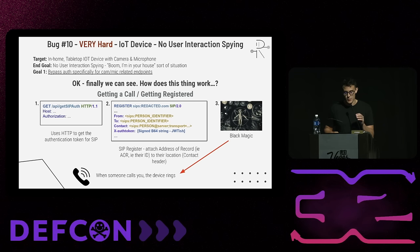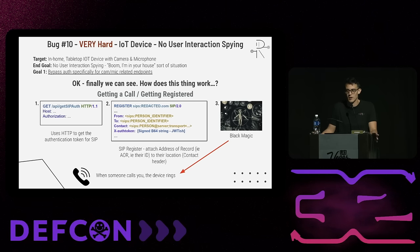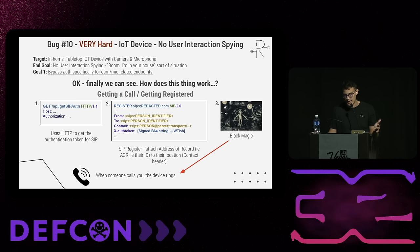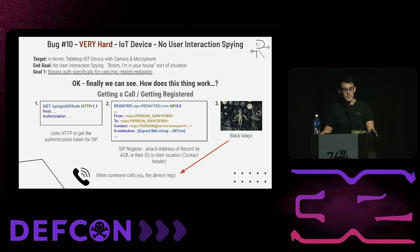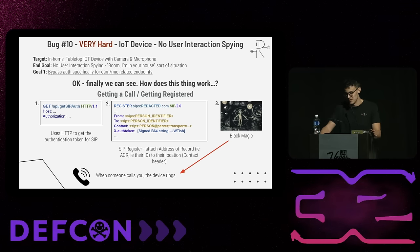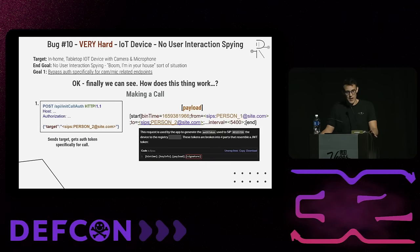They take that auth token from the API request, put it as a header in the SIP protocol — which is very similar to HTTP with headers and similar concepts — then put that auth token into the request with its own SIP-level from, to, and contact headers. That allows you to register the address of record that is in the to header. When doing this registration, it validates that the from and to fields from the auth token match the from and to fields in the SIP request. Then somehow through black magic, when somebody calls you, your phone will ring.